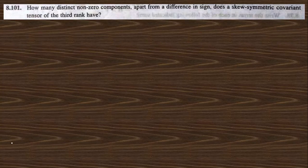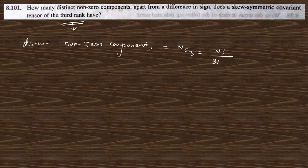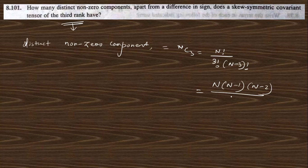Next: how many distinct non-zero components, apart from sign differences, does a skew-symmetric tensor of rank 3 have? When we go to rank 3, the distinct non-zero components equal nC3, which is n factorial divided by 3 factorial times (n minus 3) factorial. Simplifying: n times (n minus 1) times (n minus 2) divided by 6, since 3 factorial is 6. So this is the number of independent non-zero components.